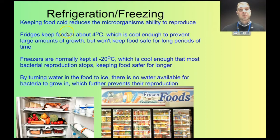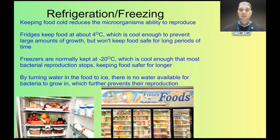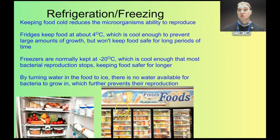We refrigerate and freeze food to cool it down enough to remove or reduce bacteria's ability to reproduce. Refrigerators keep food at around 4 degrees Celsius — cool enough to prevent large amounts of bacterial growth, but warm enough to consume comfortably. The problem is refrigerators don't keep all foods safe for long periods, and even at 4 degrees some bacteria can still reproduce. Freezers are kept at around minus 20 degrees, which is cold enough that bacteria stop reproducing entirely. Any water inside the food also turns to ice, reducing available moisture, since bacteria need moisture in order to reproduce.